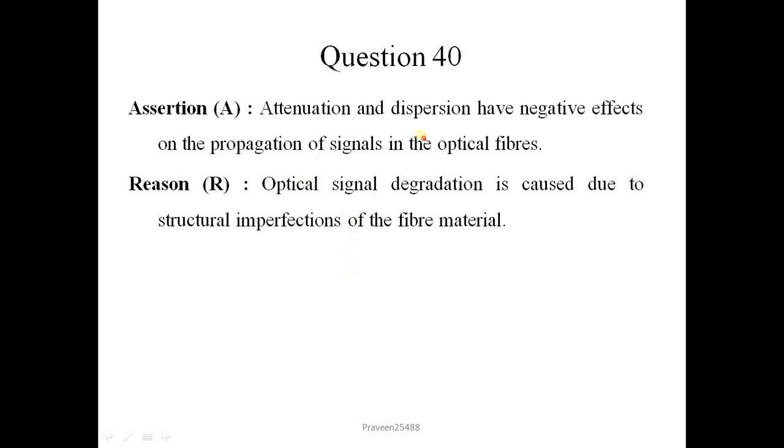Attenuation and dispersion have negative effects on the propagation of signal in the optical fibers. So this statement is correct. Optical signal degradation is caused due to structural imperfections of the fiber material. This statement is also correct, but it is not the correct explanation of this. So correct option is 2.